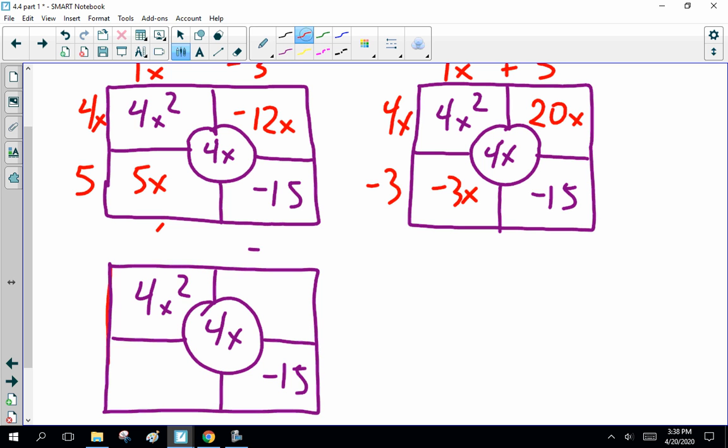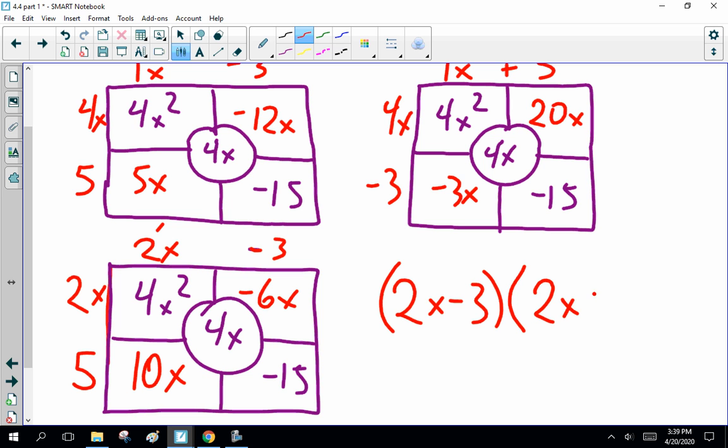So, 5. Minus 3 and 5 again. 2x and 2x. So, this is minus 6x. 10x. Woohoo! That works. 2x minus 3 times 2x plus 5. Yes. That works. All right.